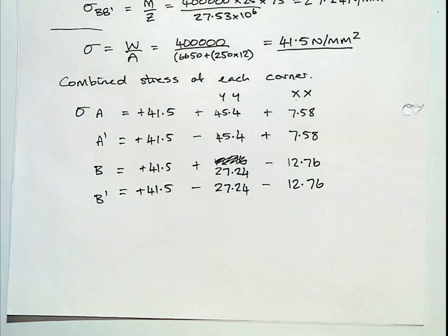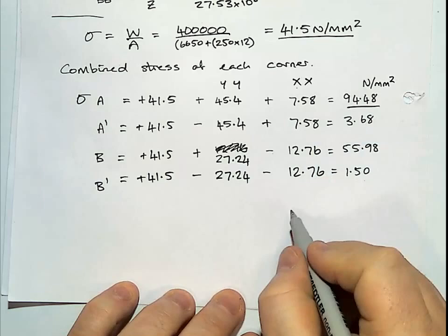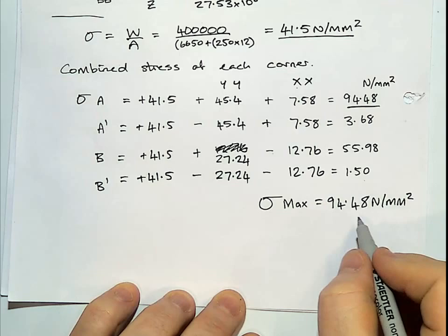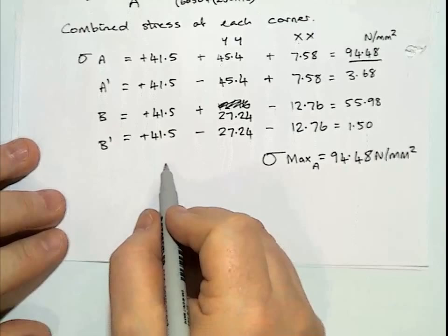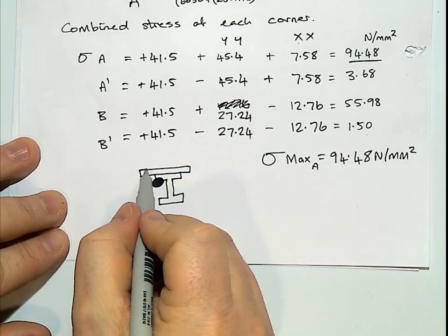Add all those together. They're all newtons per millimetre squared. Our maximum... Maximum stress is 94.48. And that's at location A. Which seems obvious. If we've got our force in this quadrant, this corner. That's why we've got our maximum stress at that point.